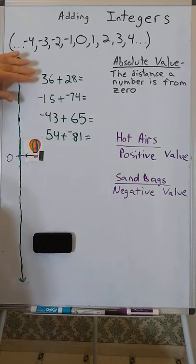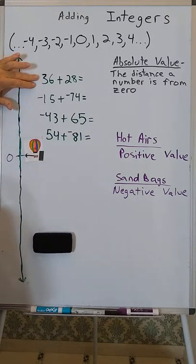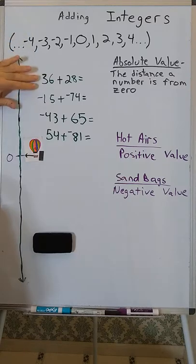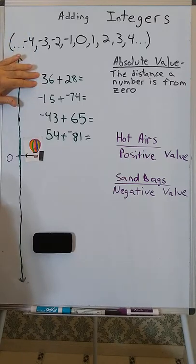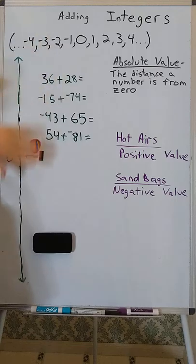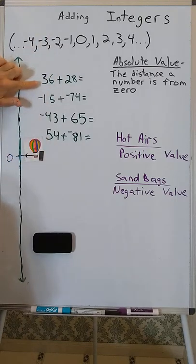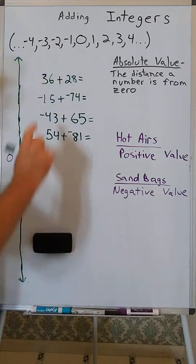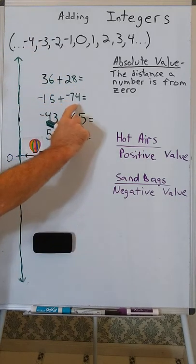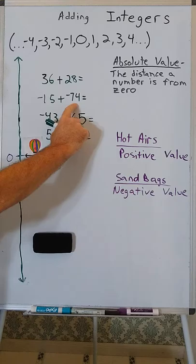If you're adding two integers, these are the four possibilities: both of them are positive, or both of them are negative.